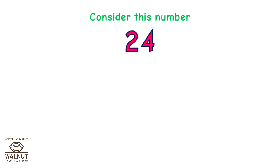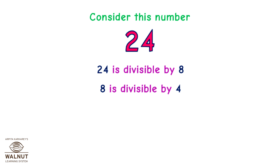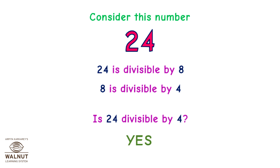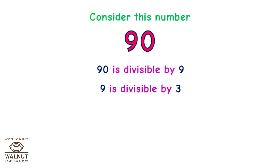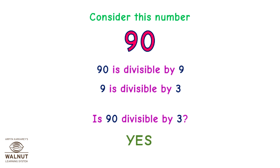Consider the number 24. 24 is divisible by 8, and 8 is divisible by 4. Is 24 divisible by 4? Yes. Consider the number 90. 90 is divisible by 9, and 9 is divisible by 3. Is 90 divisible by 3? Yes.